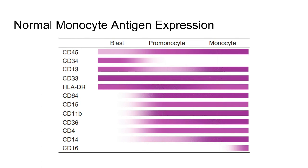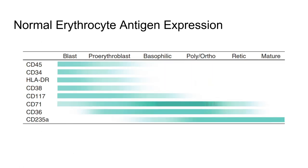Immunophenotypically, monocytes are a very heterogeneous cell type with varying expression profiles depending on location — in circulation, monocytes express CD11b, while in extravascular sites they possess higher levels of CD11c and HLA-DR. Erythroblasts and pro-erythrocytes continue to express CD117 and eventually lose this expression as they mature. Reticulocytes will express CD71 and CD235A. With continued maturation, CD71 is lost while CD235A is retained.